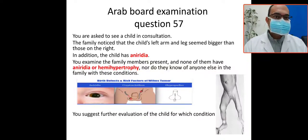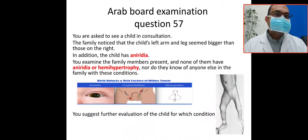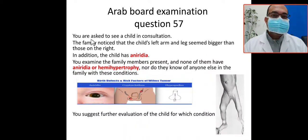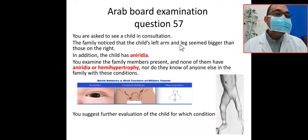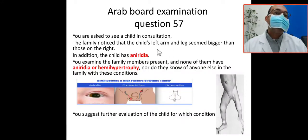Our case today is a common Arab port — Saudi port, Jordanian port — and you can also encounter this during discharge of a patient from the postnatal ward or nursery. You are asked to see a child in consultation. The family noticed that the child's left arm and leg seemed bigger than those of the right.